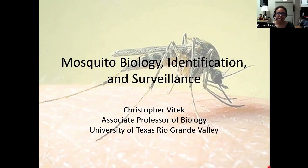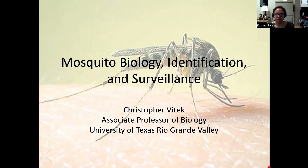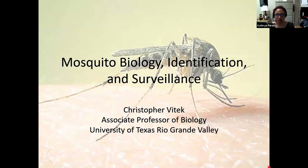Dr. Vitek did his bachelor's in biology with a minor in math at Drew University in New Jersey, and then a PhD in biology at Clark University in Massachusetts. His research interests are in the biology and ecology of mosquitoes and other vectors of disease. A recent publication was about the vectors of dengue, human activity, and virus transmission potential in the Rio Grande Valley. He also studies Zika transmission and vector-borne disease transmission locally, and he's the director of our Center for Study of Vector-Borne Diseases. I'd like to turn this over to Dr. Vitek.